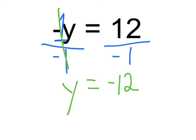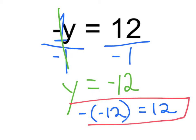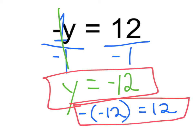So that is our answer. If we pop in negative 12: negative times negative 12 equals 12. A negative times a negative is a positive, so this checks out. y equals negative 12 is our solution.